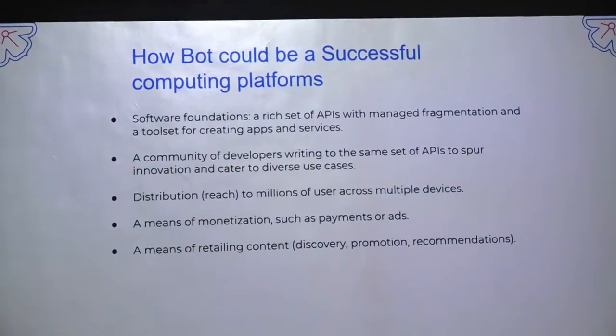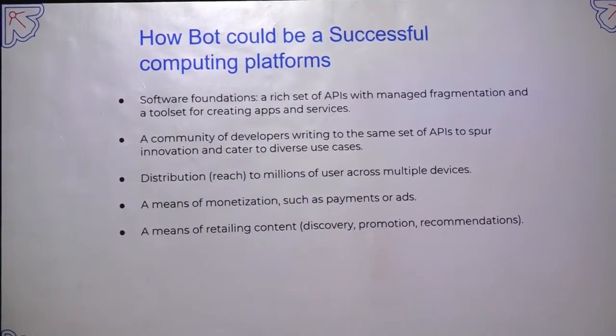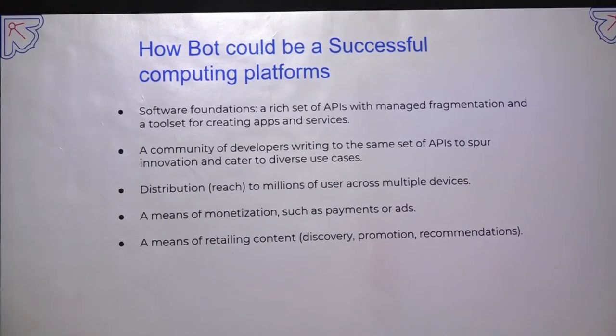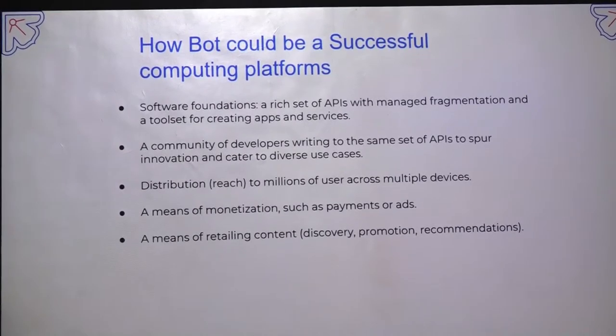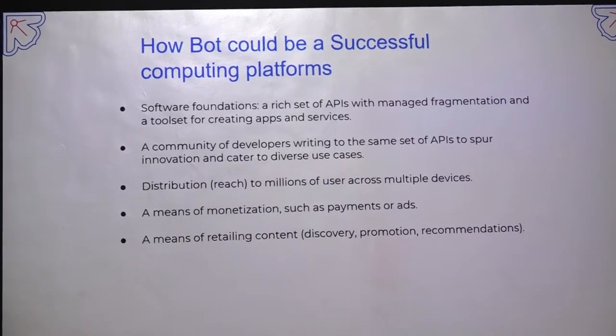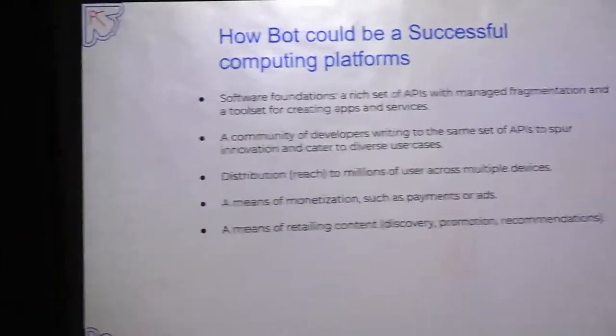Next is how a bot could be a successful computing platform. Generally there are five paradigms considered to make a successful computing platform. Those are: a software foundation containing a rich set of APIs; a community of developers who can contribute to the software foundation; distributions - generally called distros - that can reach multiple devices; monetization, meaning how we can monetize by developing applications or bots using the software foundation; and how we can retail the content. Drupal is a simple example of a successful computing platform because it has good stable releases, a good community, good distros, and it is free - but we can develop our distributions, monetize them, and retail that content. Similarly, the bot has evolved like this.